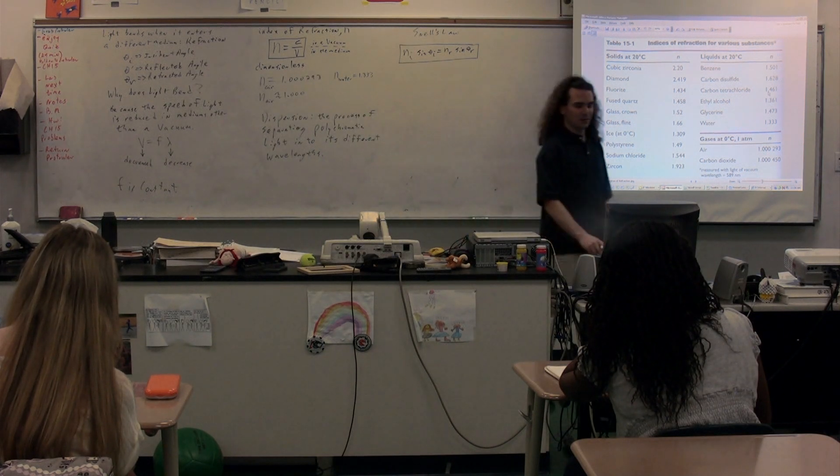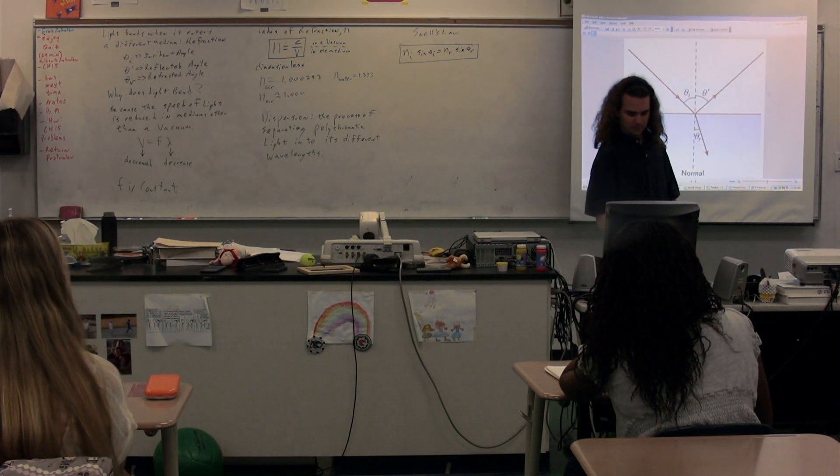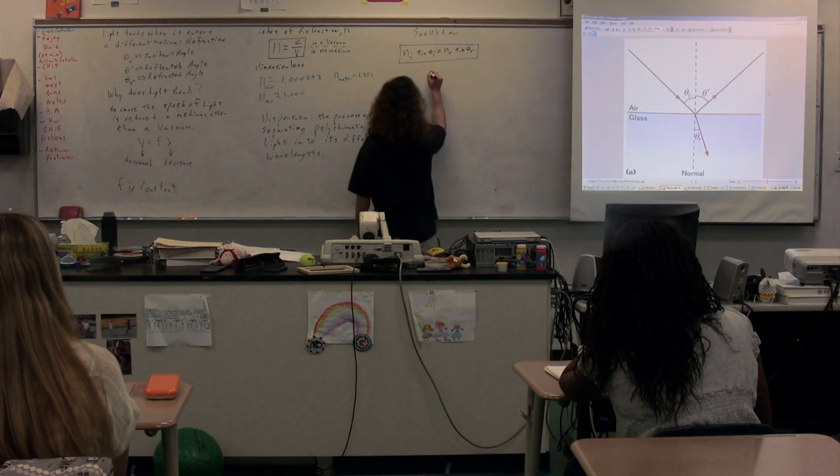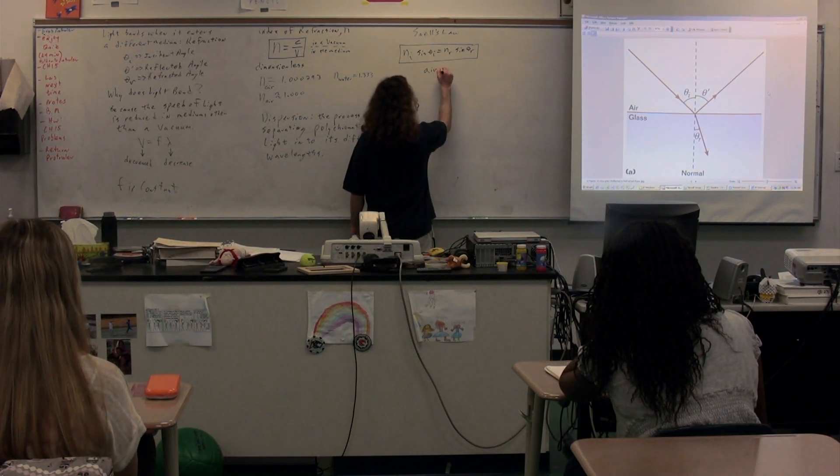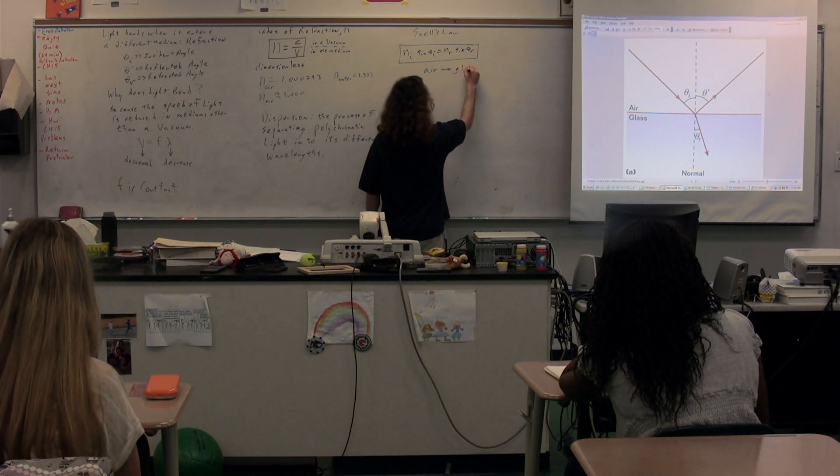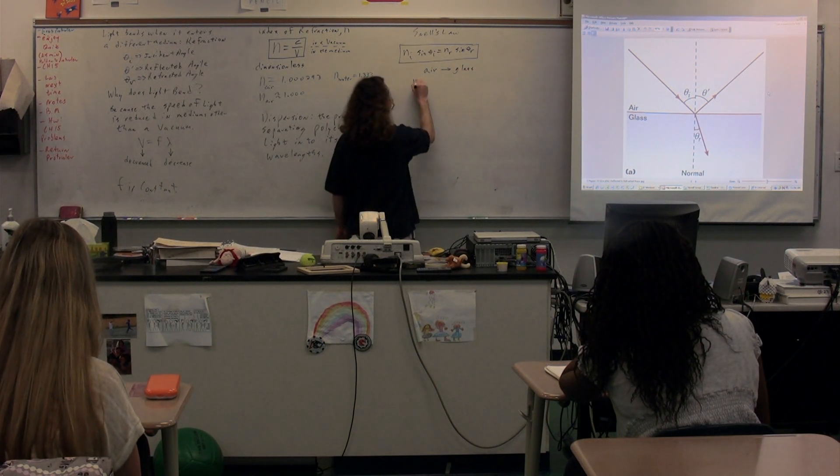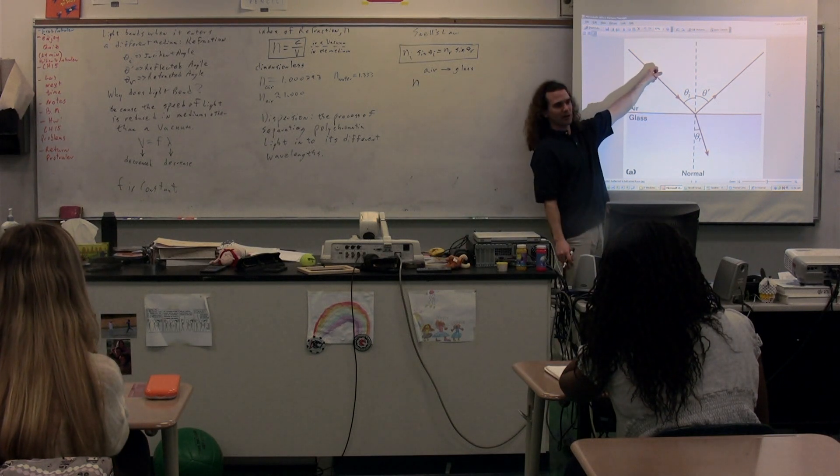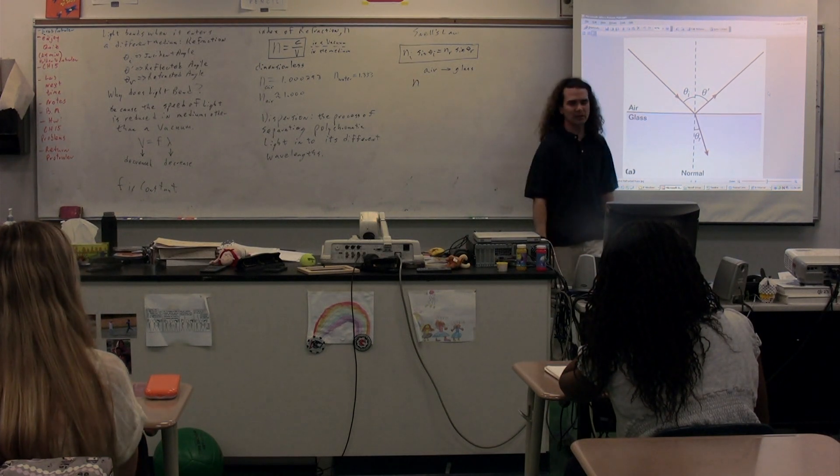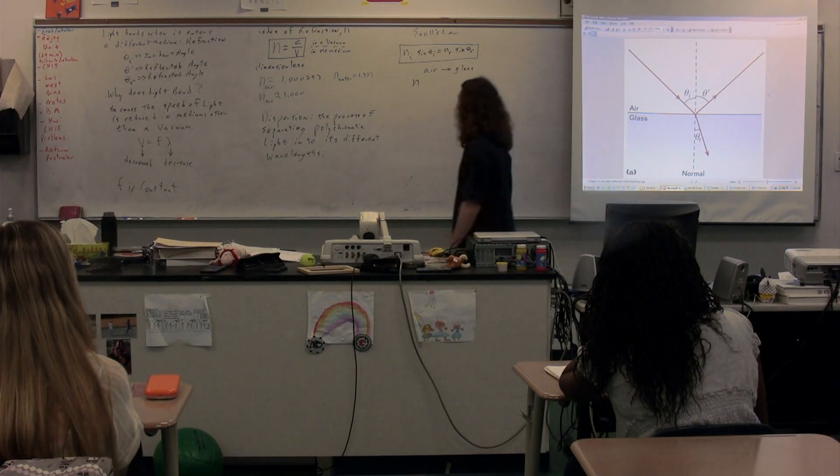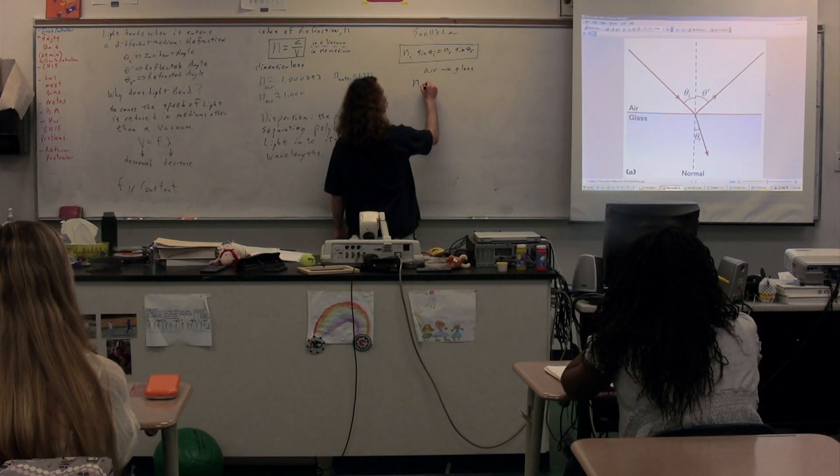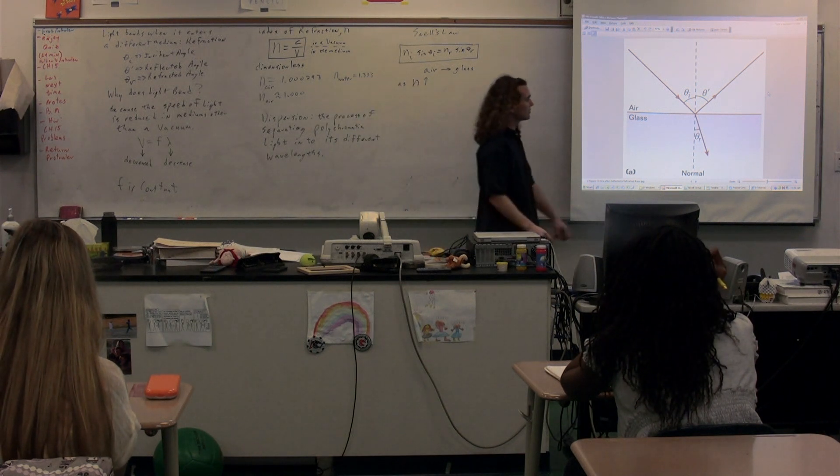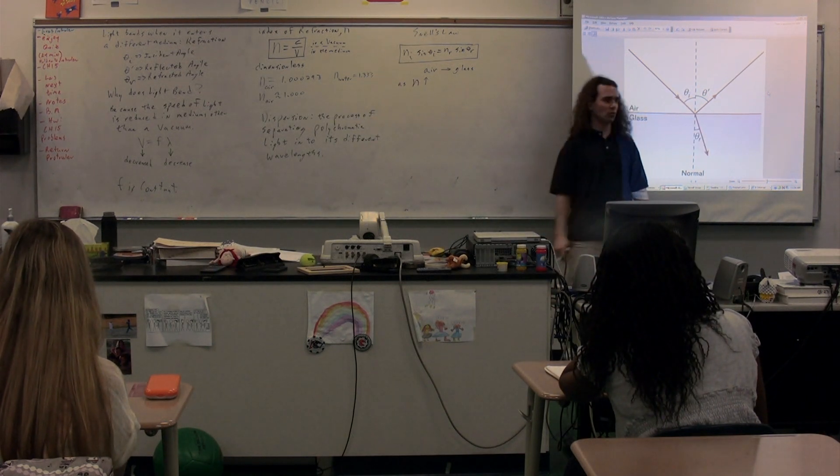Let's go back and look at the original picture. In this picture, as the light goes from air into glass, the index of refraction goes from being in a substance where the index of refraction is 1 to where the index of refraction is 1.333. So, the index of refraction increases. As the index of refraction increases, the light is bent toward the normal.